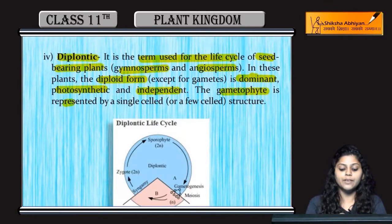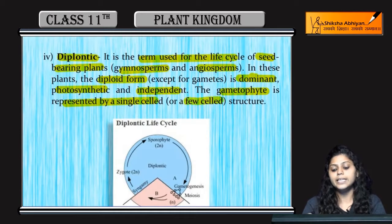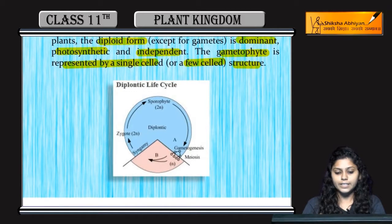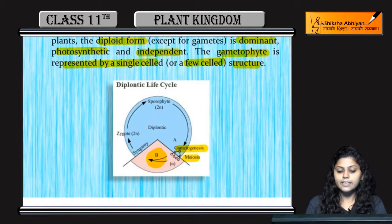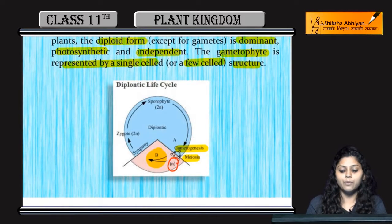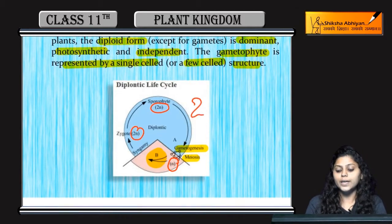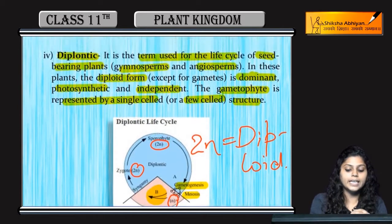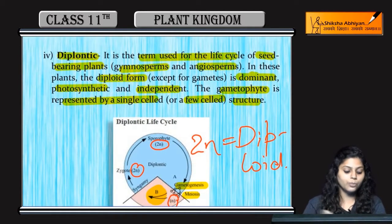In the diplontic phase, gametophytes are represented by a single cell. Meiosis produces the haploid stage, while the sporophyte and zygote are diploid (2N). Therefore, the diploid state is dominant — this is a diplontic-type life cycle.